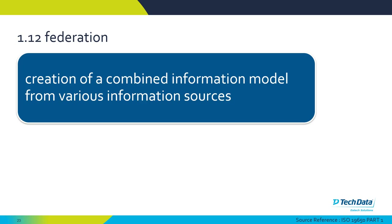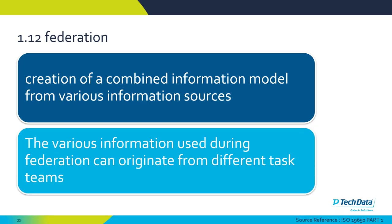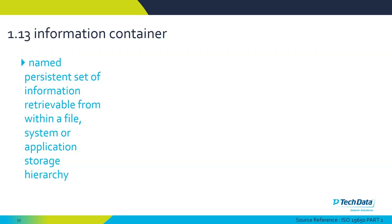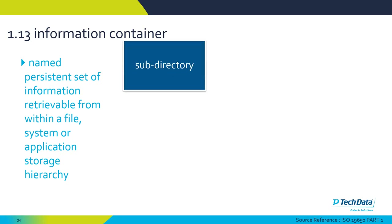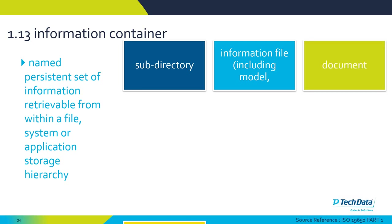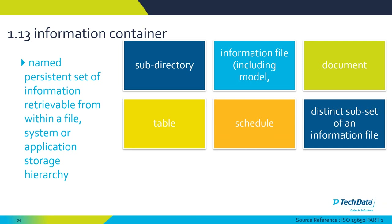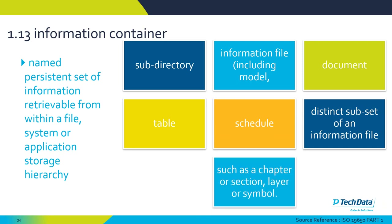Federation is the creation of a combined information model from various information sources — pulling together information from different appointed parties or consultants on the project. Even bringing together the architectural model and the structural engineering Revit model is known as federation, and the various information used can come from different task teams. An information container is a structured information container — it can be a file, a document, a subdirectory, a 3D model document, a table, a schedule, or even a chapter or section in a building regulation.